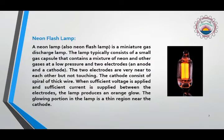Neon flash lamp: A neon lamp, also known as neon flash lamp, is a miniature gas discharge lamp. It consists of a small gas capsule that contains a mixture of neon and other gases at a very low pressure and two electrodes. The two electrodes, anode and cathode, are placed very near to each other but they are not touching each other. The cathode consists of a spiral of thick wire. When sufficient voltage and current is supplied between the electrodes, the lamp produces an orange glow. The glowing portion in the lamp is a thin region near the cathode.